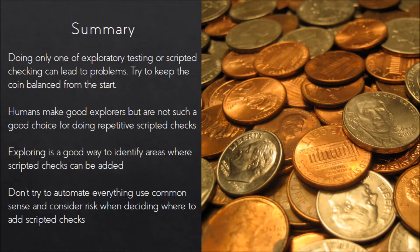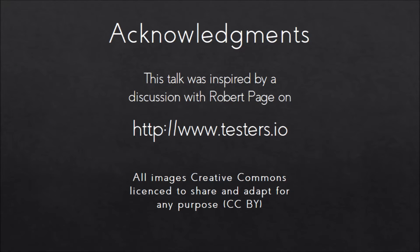A quick summary of today's talk: only doing one type — exploratory testing or scripted checking — can lead to problems. You've got to keep that coin balanced on the edge and do a bit of both. Humans make good explorers but not a good choice for repetitive scripted checks. Exploring is good at identifying areas where scripted checks can be added. Whatever you do, don't try to automate everything — just because you can doesn't mean you should. Always consider risk. I got the idea for this talk after talking to Robert Page on testers.io, a Slack group I'd highly recommend — about 2,000 testers last time I checked. All images are from Creative Commons. Thank you very much for coming and for listening.